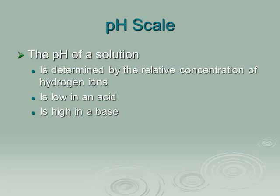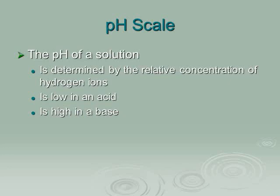When talking about acids and bases, you have to refer to the pH scale, which measures how acidic or basic a solution is. It ranges from zero to 14. The pH of a solution is low for acids — a pH of zero is a very strong acid. On the other hand, bases are high on the pH scale, and a pH of 14 is a very strong base.